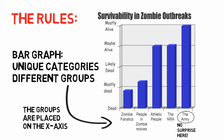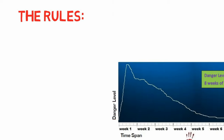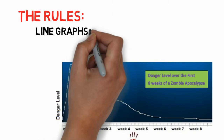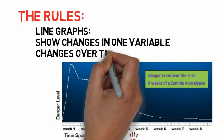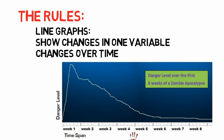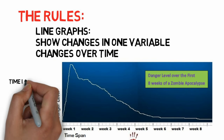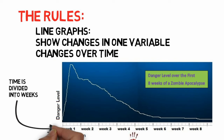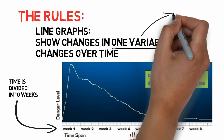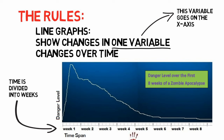Now the rules for a line graph. Line graphs show changes in one variable, or changes over time. In a line graph, one variable has been divided up and is displayed on the x-axis. This is shown in the graph displayed, as time is the variable that is changing. Danger level goes down over time because everybody turns into zombies, and there's no more danger.